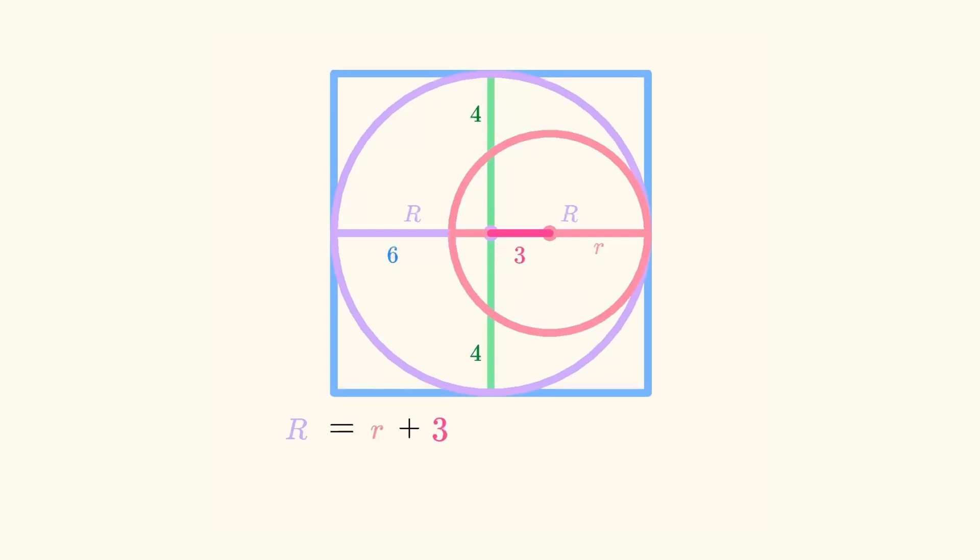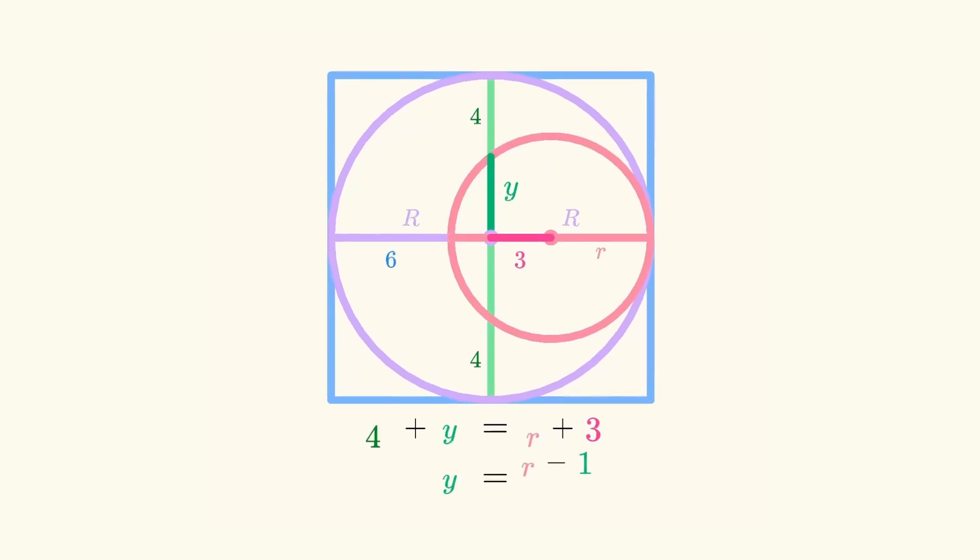Moving to the vertical line now, we'll call this distance y. Since y plus 4 and r plus 3 are both equal to the radius of the large circle, we can set them equal to each other. After some simplification, we find that y equals r minus 1. Let's add that to our diagram.